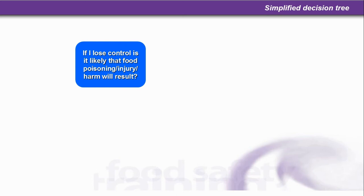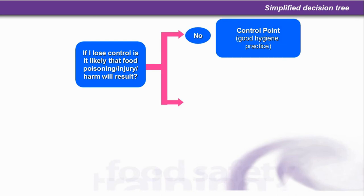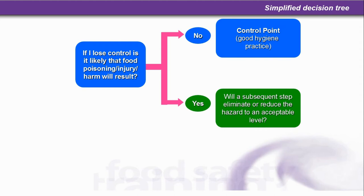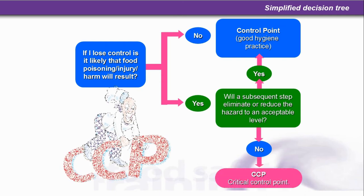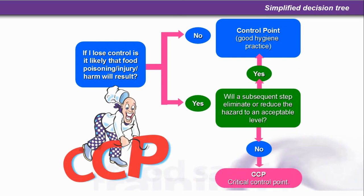Let's have a look at the simplified decision tree to decide where the CCP is. We start off with questions. The first one is: if I lose control, is it likely that food poisoning, injury, or harm will result? If the answer is no, it's a control point, which is good hygiene practice. If it's yes: will a subsequent step eliminate or reduce the hazard to an acceptable level? If it's yes, it's a control point. If it's no, it's a critical control point, or CCP.